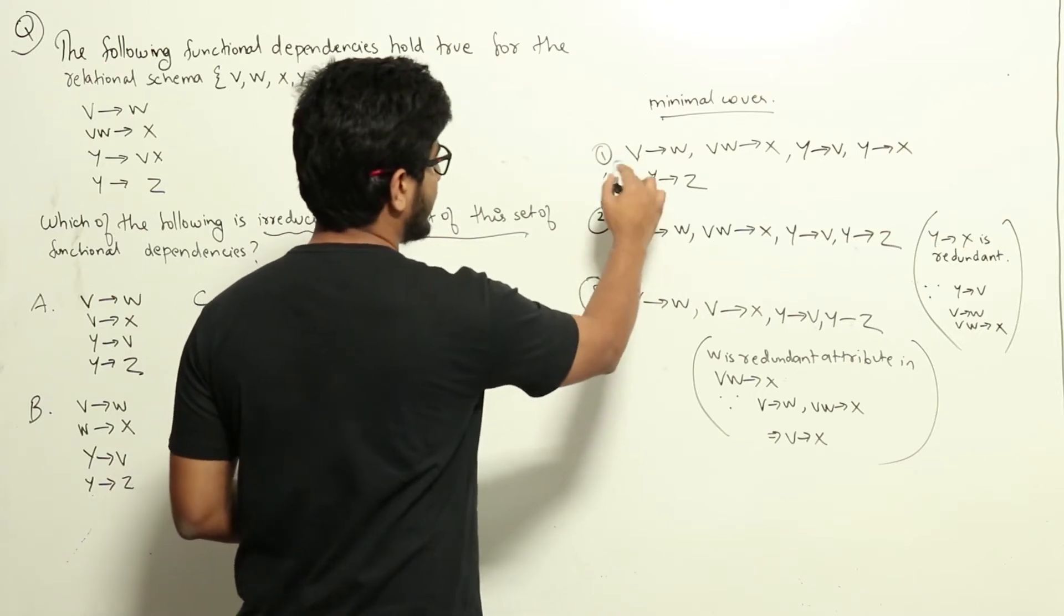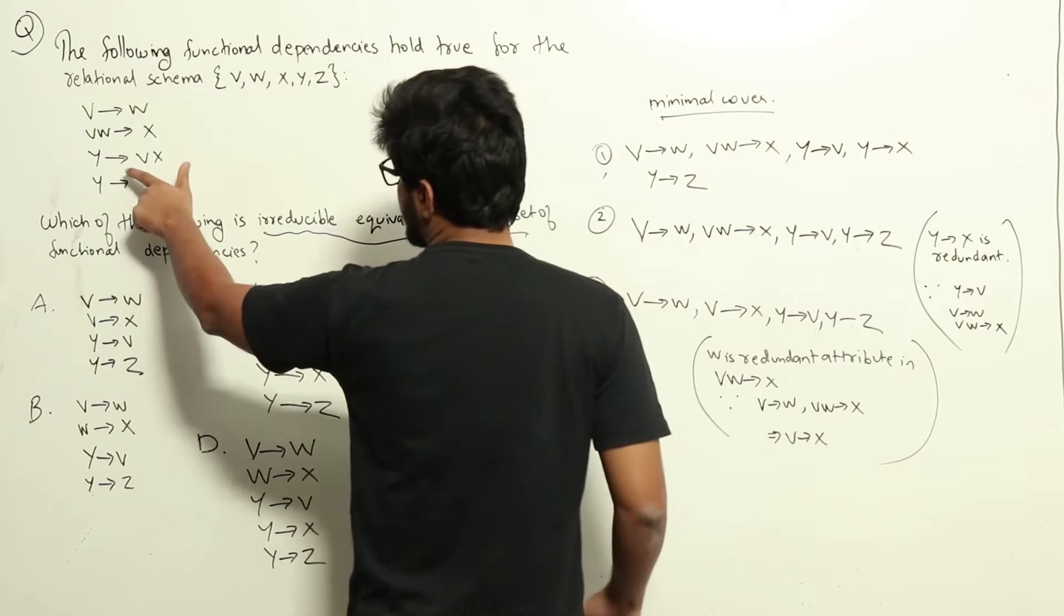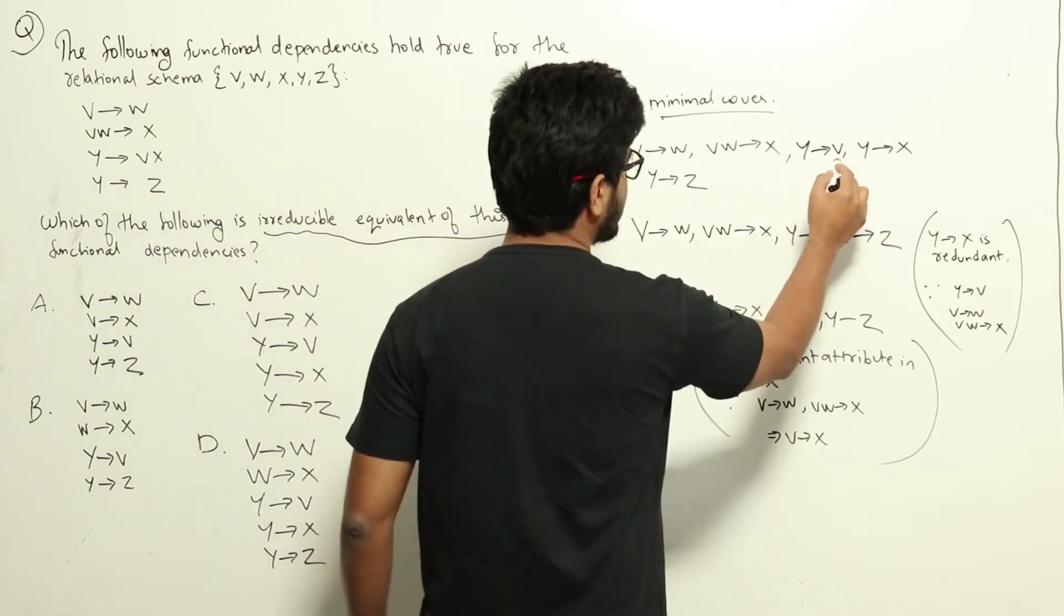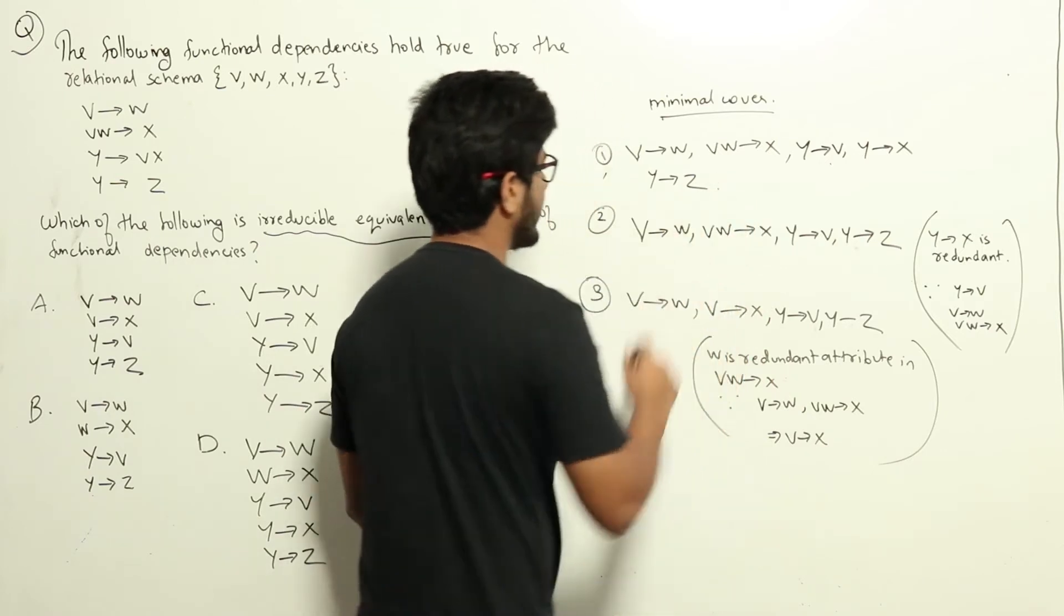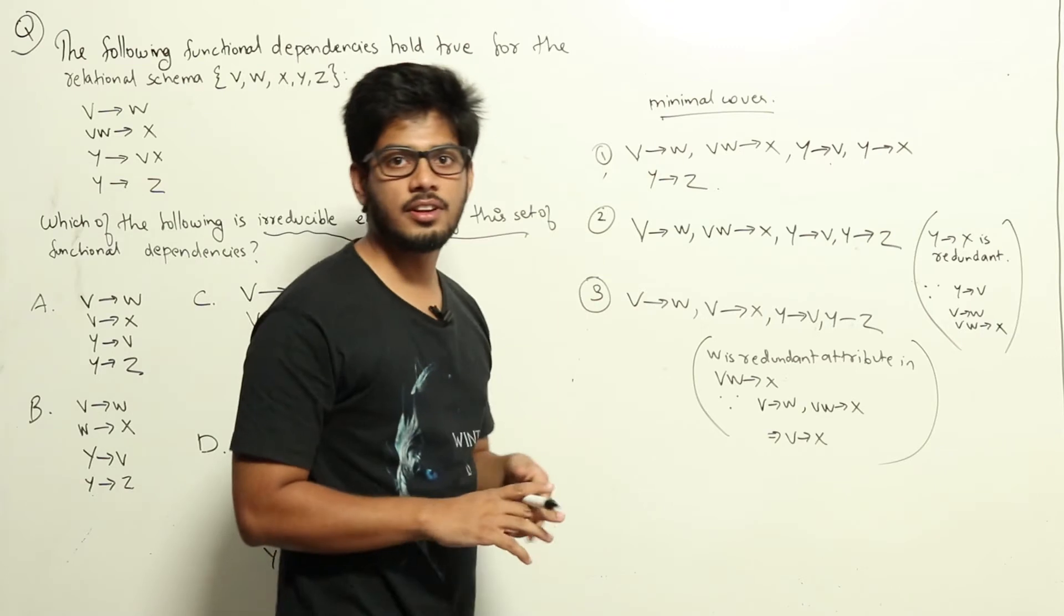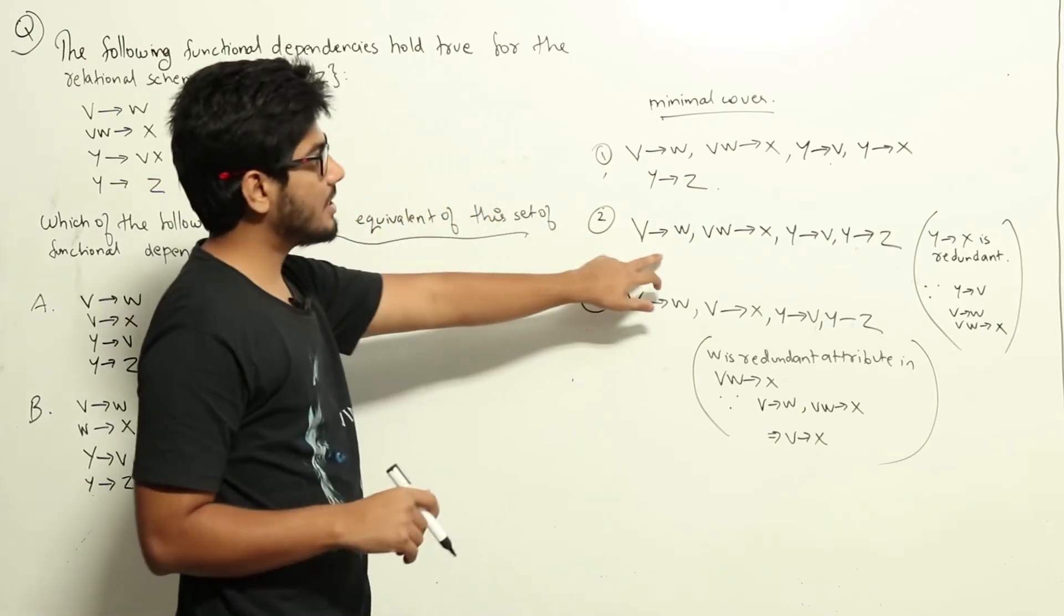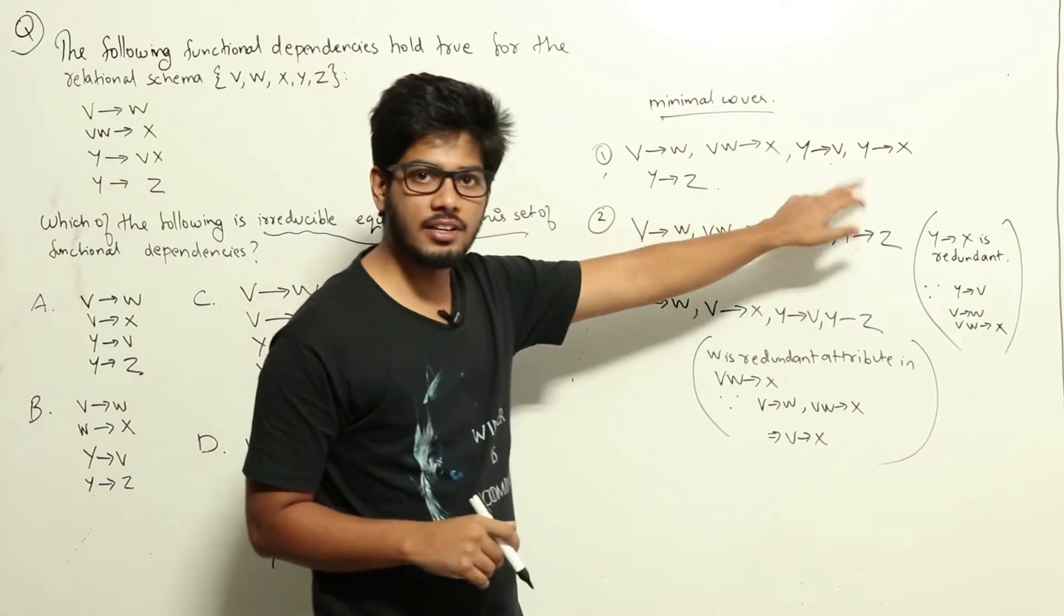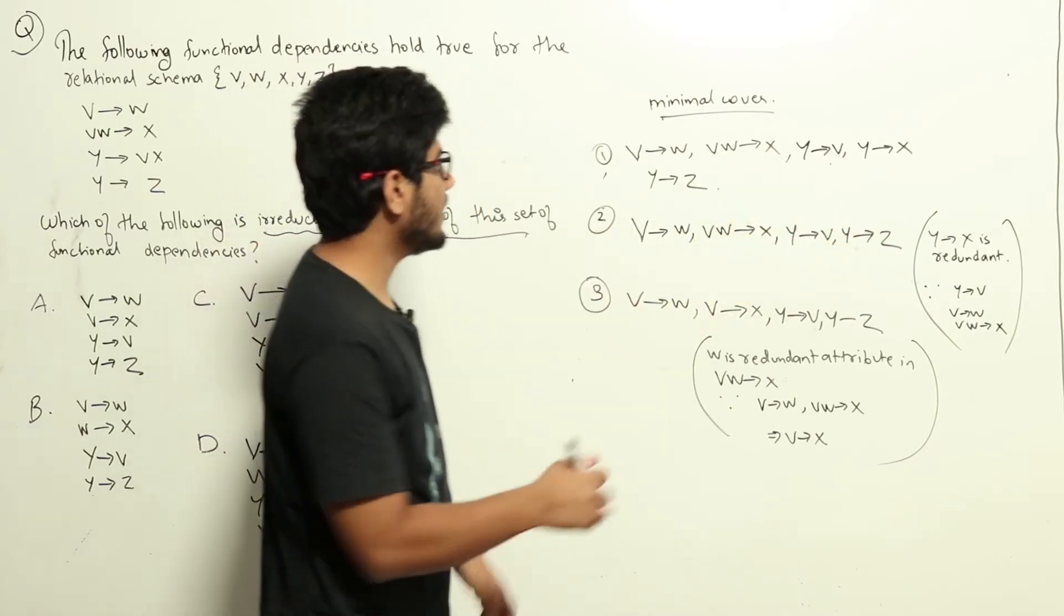The functional dependencies are V gives W, VW gives X, Y gives VX. We can split the last one as Y gives V, Y gives X, and Y gives Z. In the second step, we need to remove redundant functional dependencies from this set. A redundant functional dependency is one which can be derived without having it stated directly.